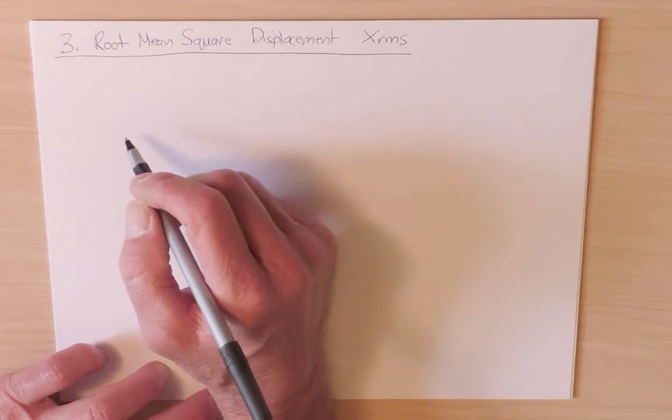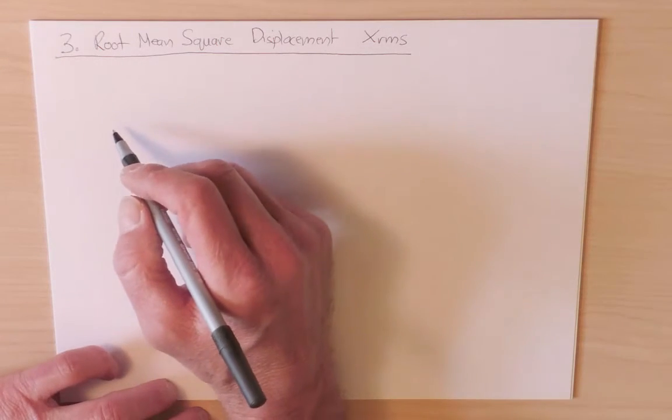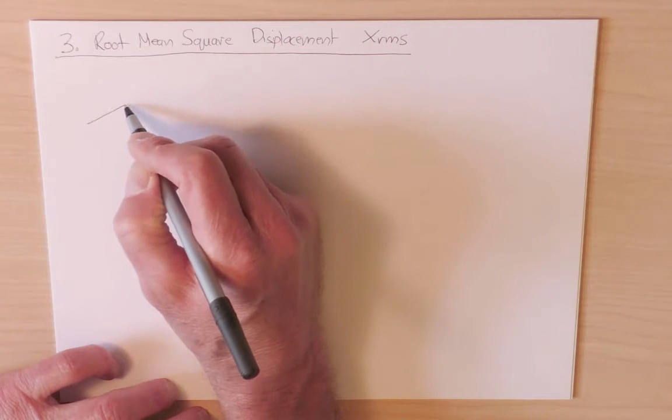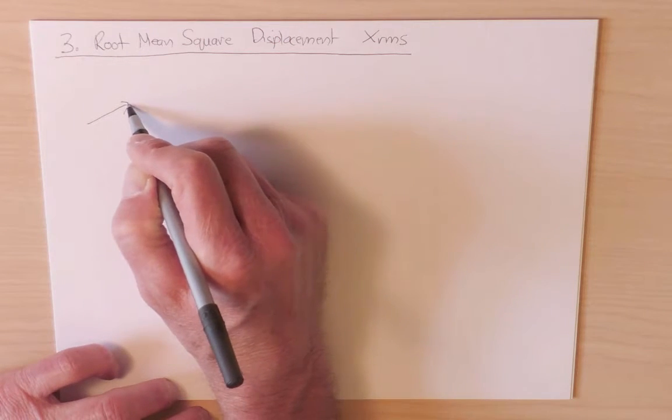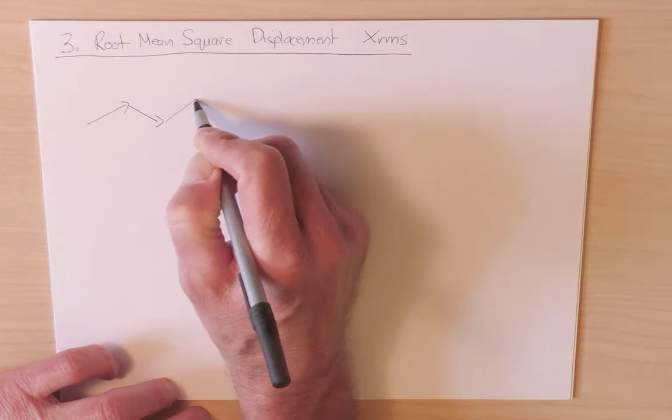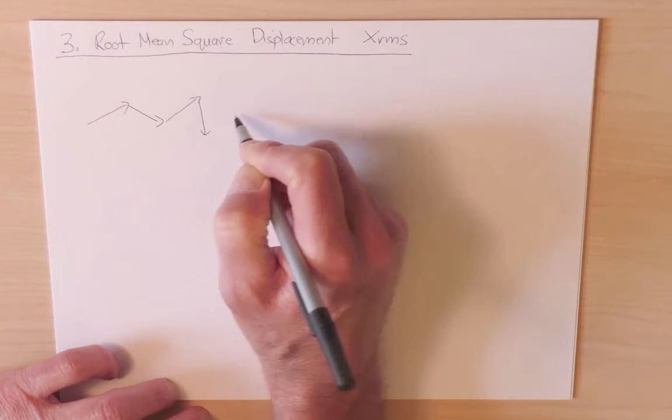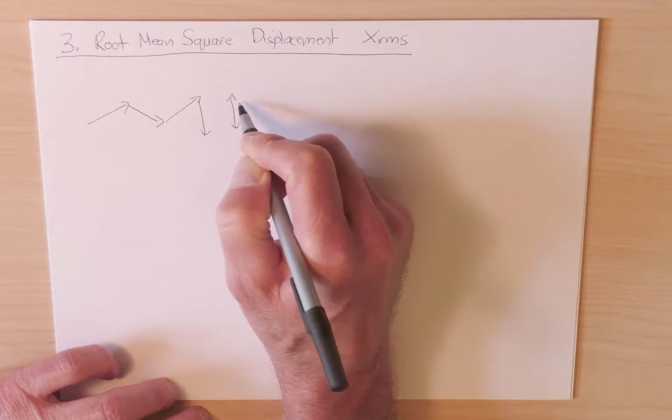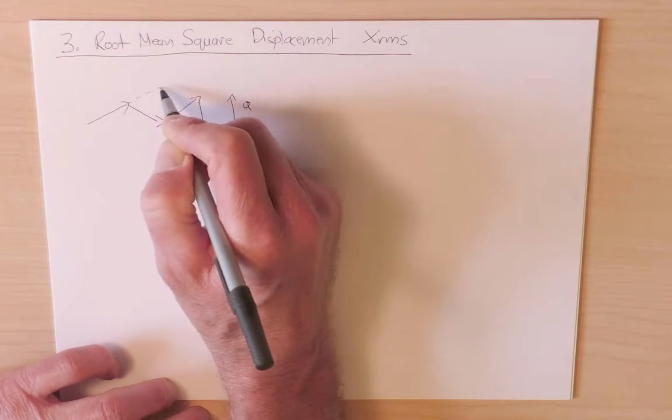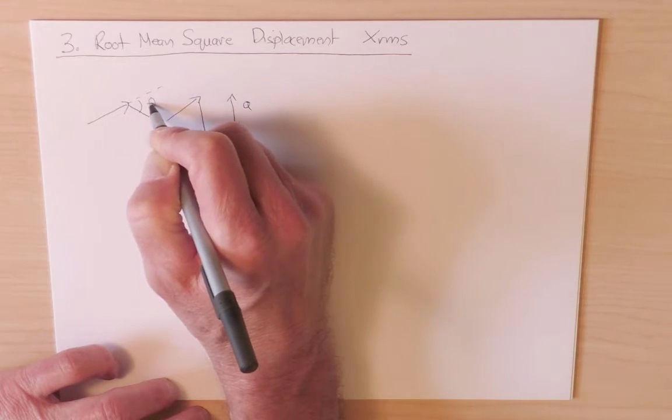The simplest situation to consider is the Pearson random walk, in which we take steps of fixed length but random direction. So here each step has length a, and the angle between each step theta is random.